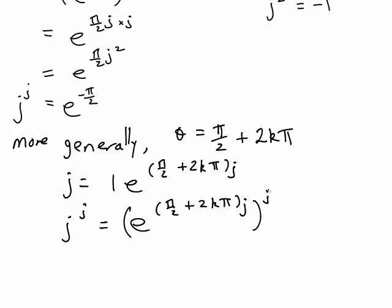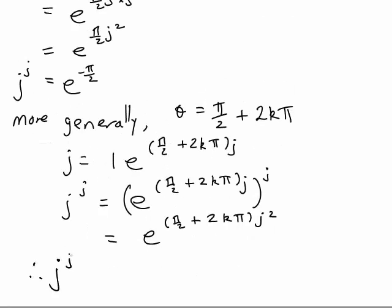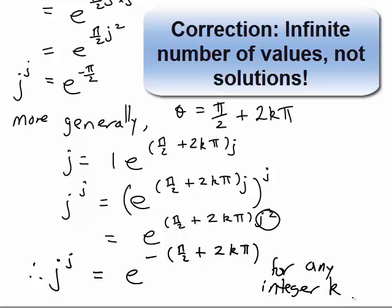So j to the power of j can be written as e to the power of pi on 2 plus 2k pi times j, all raised to the power of j. By index laws that becomes e to the power of pi on 2 plus 2k pi times j squared. Since j squared equals negative 1, it follows that j to the power of j equals e to the power of negative pi on 2 plus 2k pi, for any integer k. This means j to the power of j actually has an infinite number of solutions, and interestingly they are all real numbers.